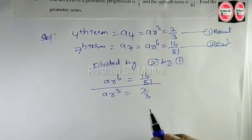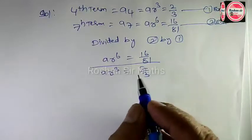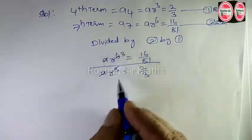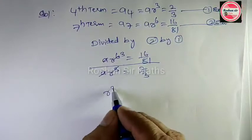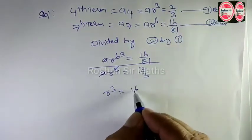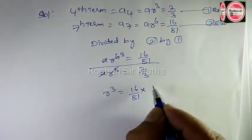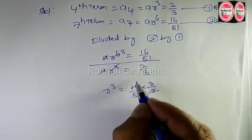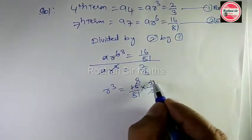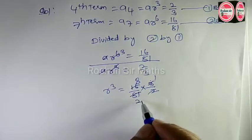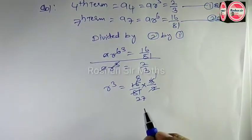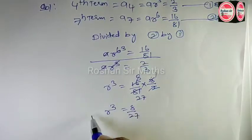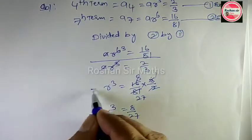यहाँ पर given है. अब इसके बाद हम A को cancel करेंगे, R power of 3 रह जाएगा. R power of 3 is equal to 16 by 81 multiplied by 3 by 2. 2 into 8 gives 16, 3 into 27 gives 81. R power of 3 is equal to 8 by 27.